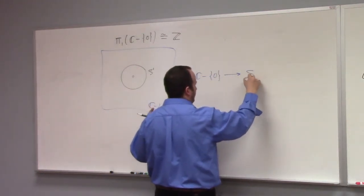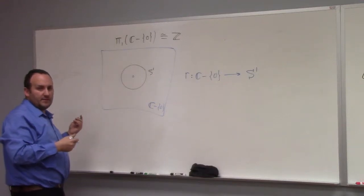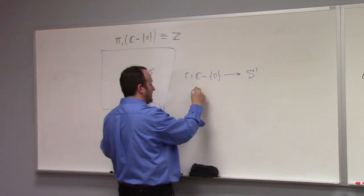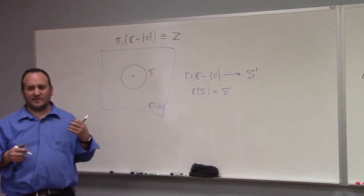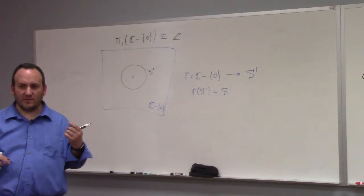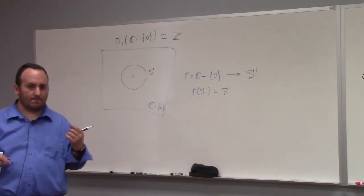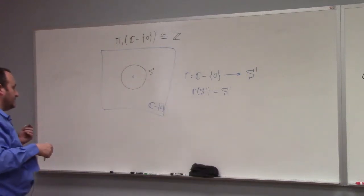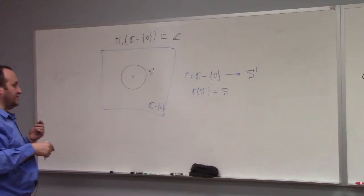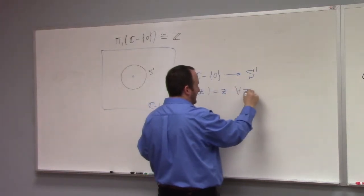What does it take to be a retract? We need a continuous map r such that r of S¹ equals S¹. Does it actually have to fix the points of the subset — or is it allowed to move them? A deformation retract actually point-wise fixes S¹, meaning r(z) = z for all z in S¹.